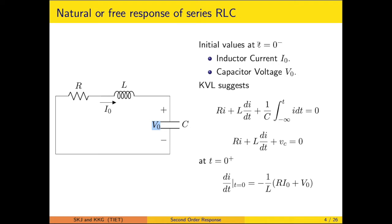That condition is regarded as t equals 0 minus, before the switching, giving the inductor current I0 and capacitor voltage V0. The current in the inductor cannot change momentarily, so the current at 0 minus equals the current at 0 plus. Similarly, the capacitor voltage at t equals 0 minus equals the capacitor voltage at t equals 0 plus. The KVL equation for this arrangement is Vr plus Vl plus Vc equals 0.